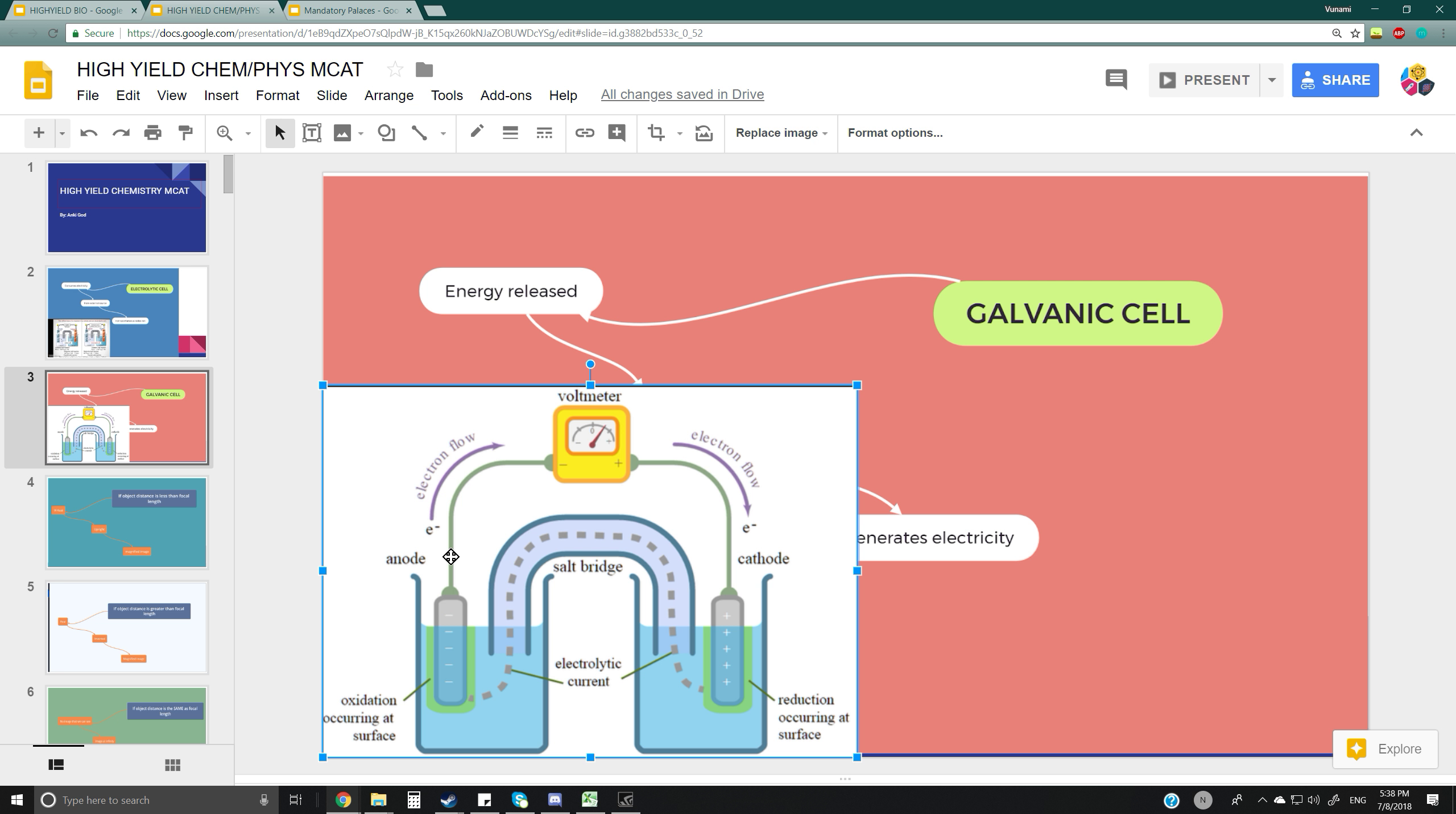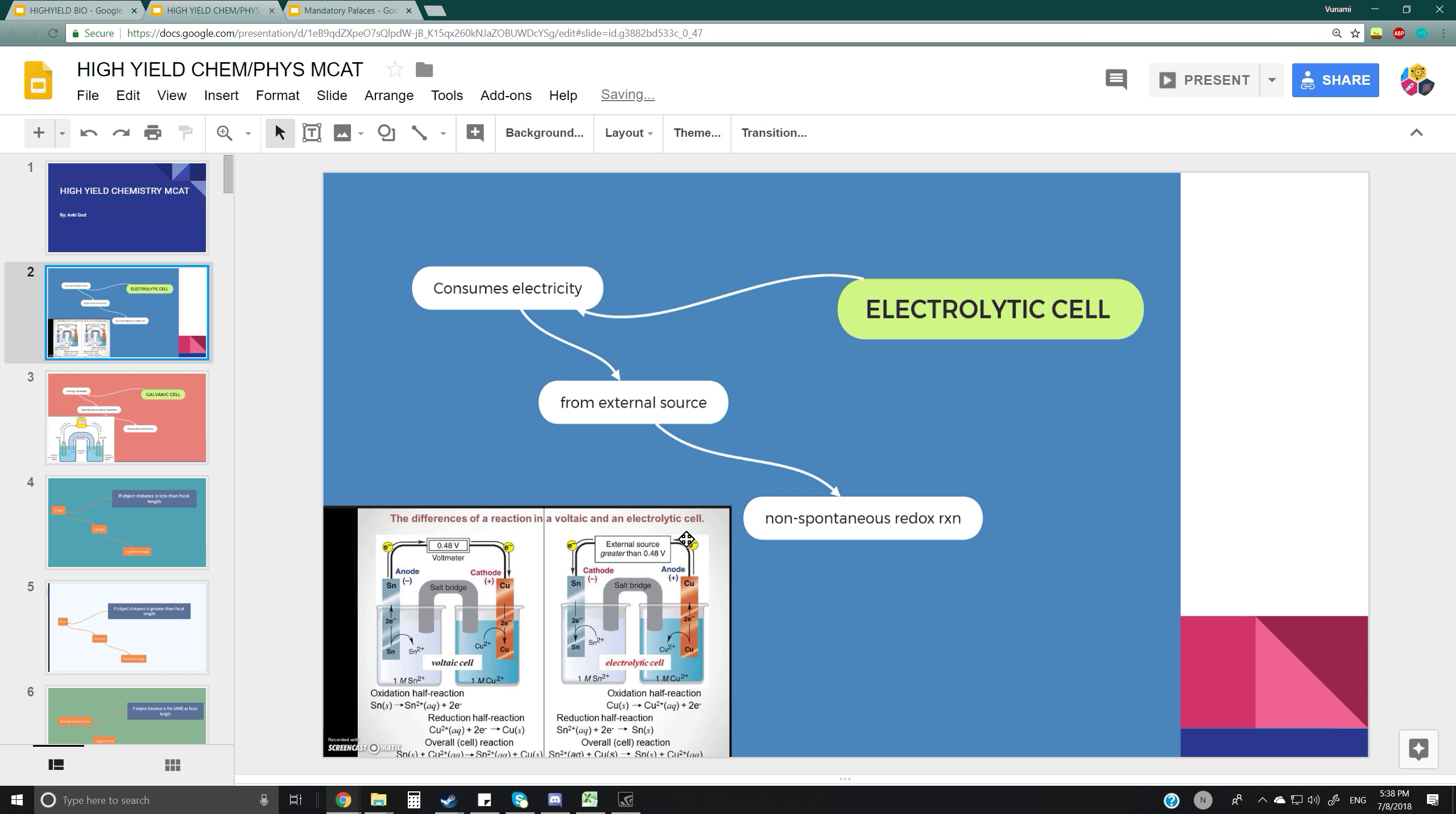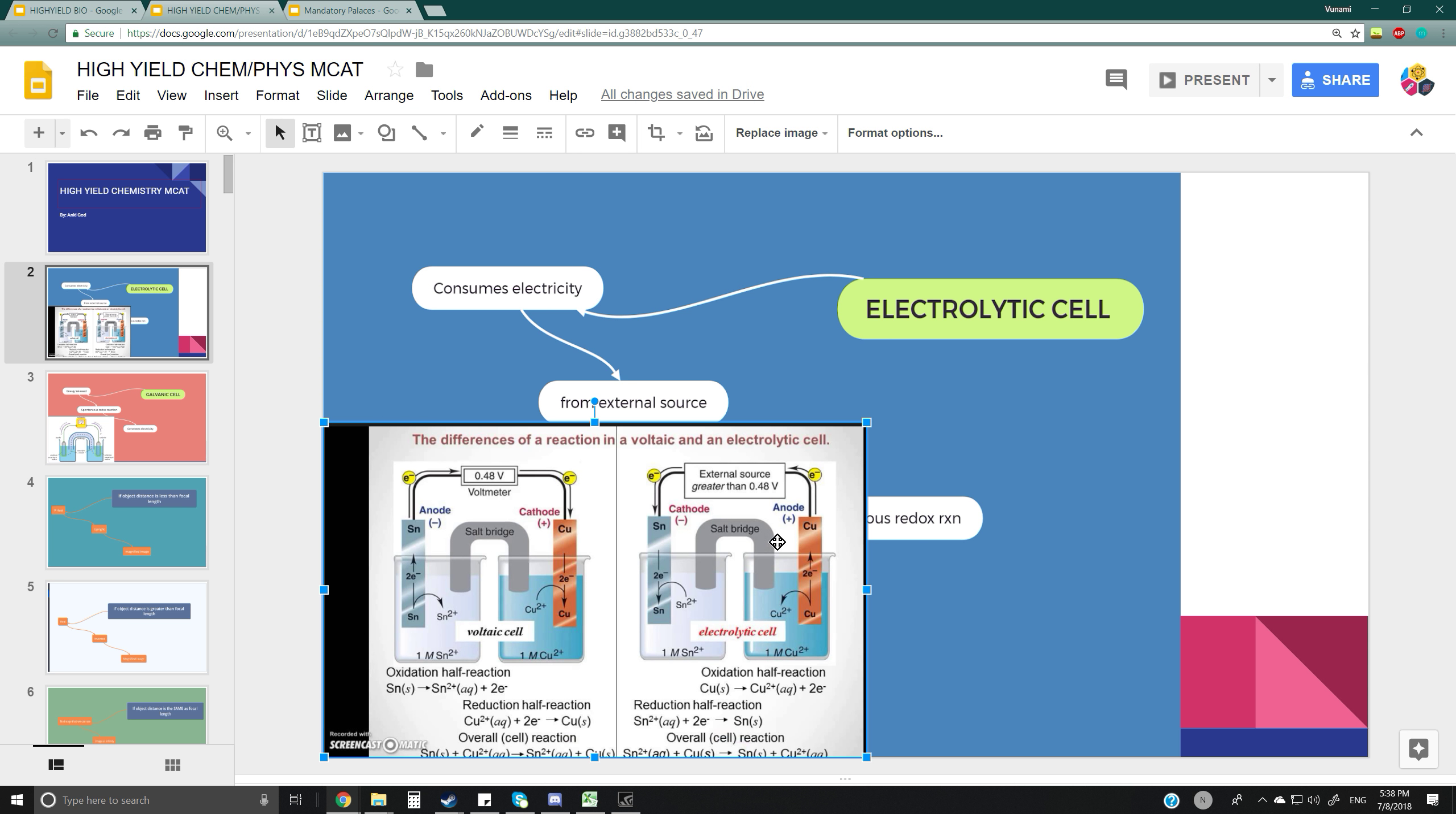Electrons flow from anode to cathode, and specifically, another difference is that in electrolytic cells, the cathode is negative while the anode is positively charged.